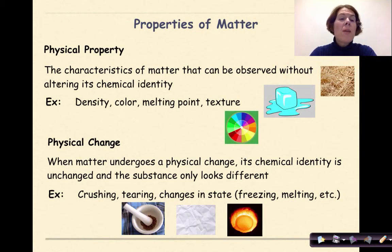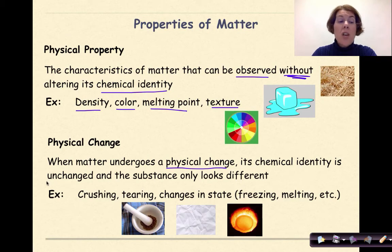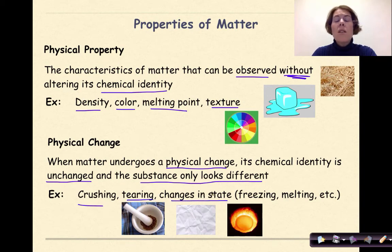A physical property is the characteristics of matter that can be observed without altering its chemical identity. So examples of physical properties are things like density, color, melting point, and texture. When matter undergoes a physical change, its chemical identity is unchanged, so we're not changing the chemical composition, and the substance only looks different. So examples of physical changes could be crushing, tearing, changes in state such as freezing, melting, vaporization. These all represent physical change.